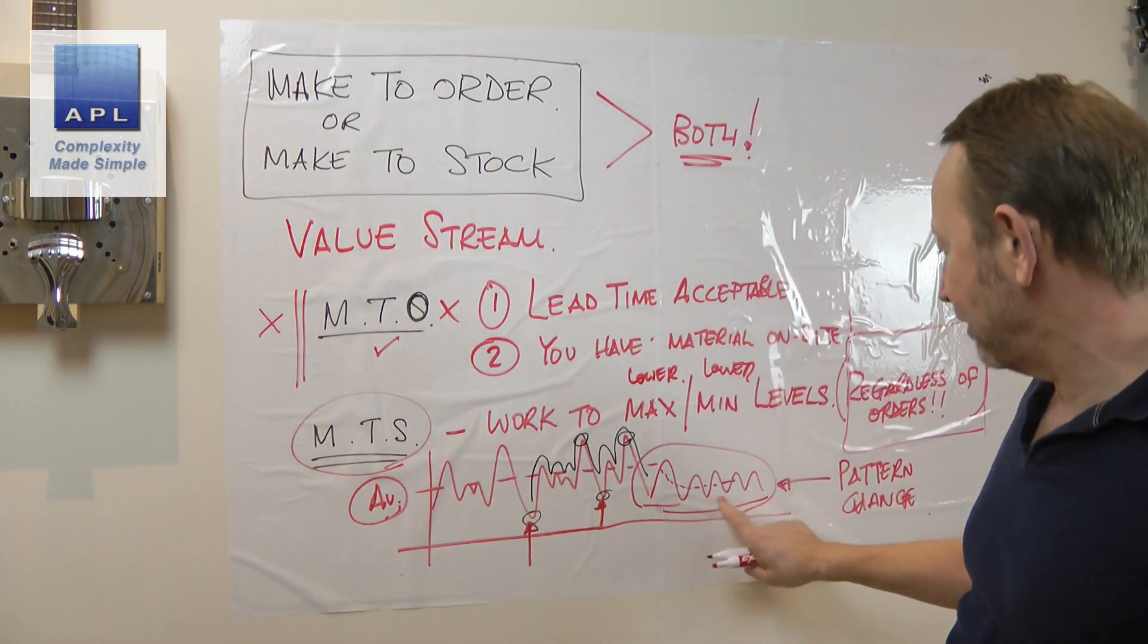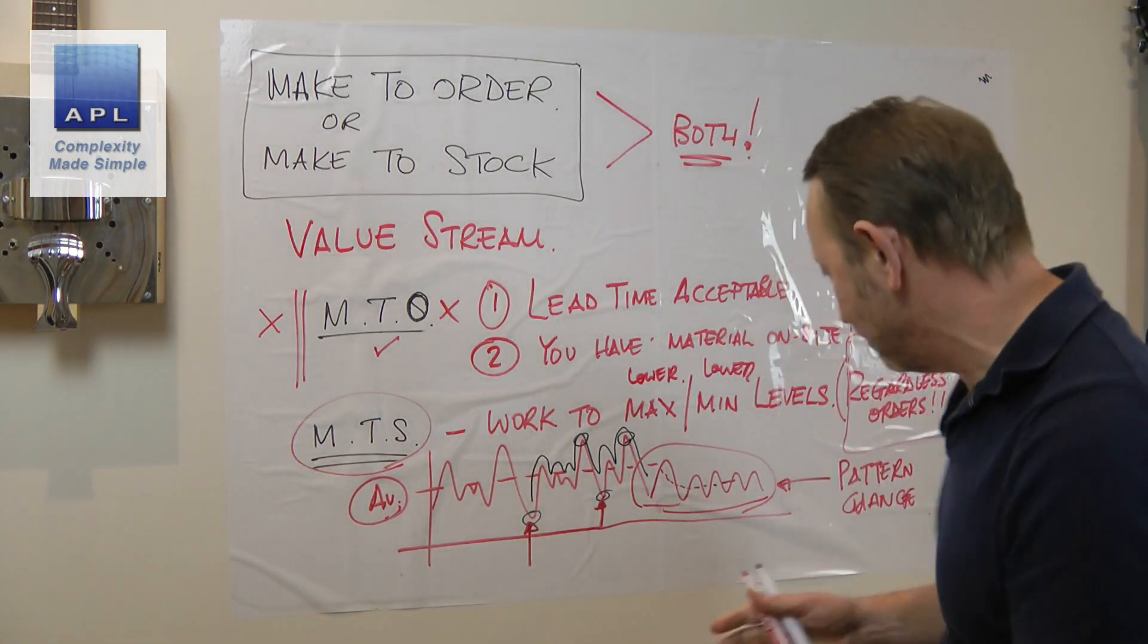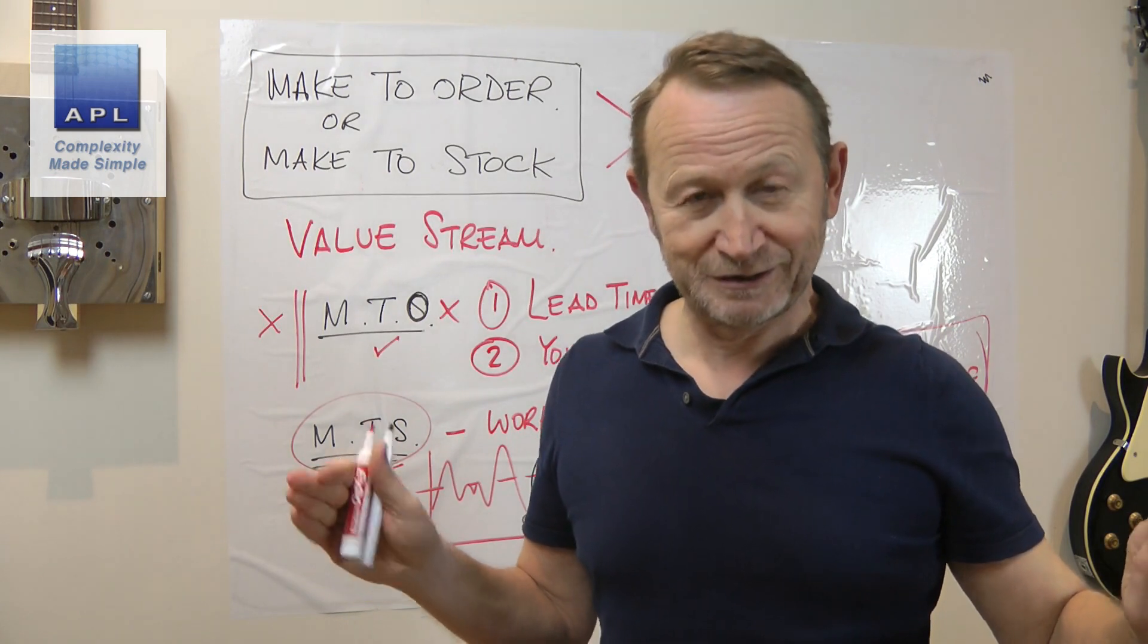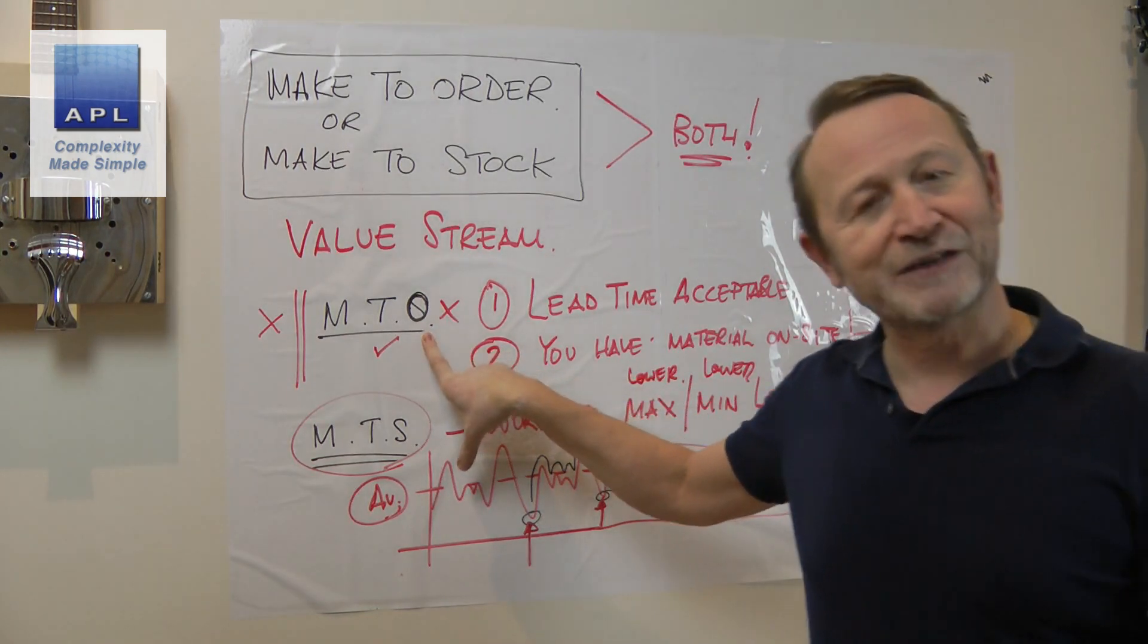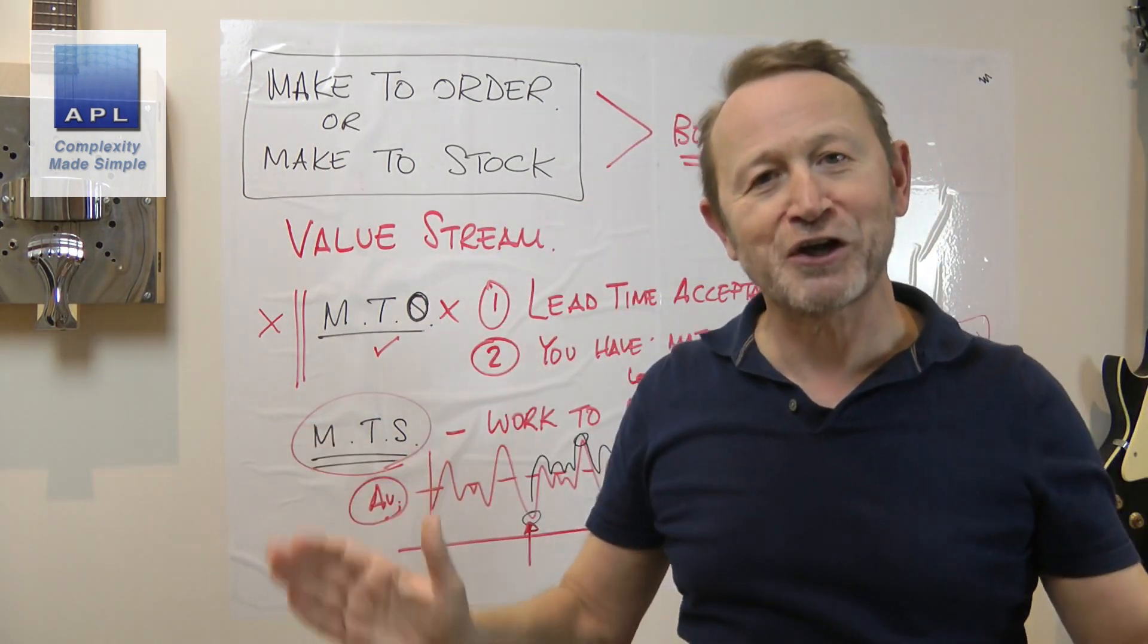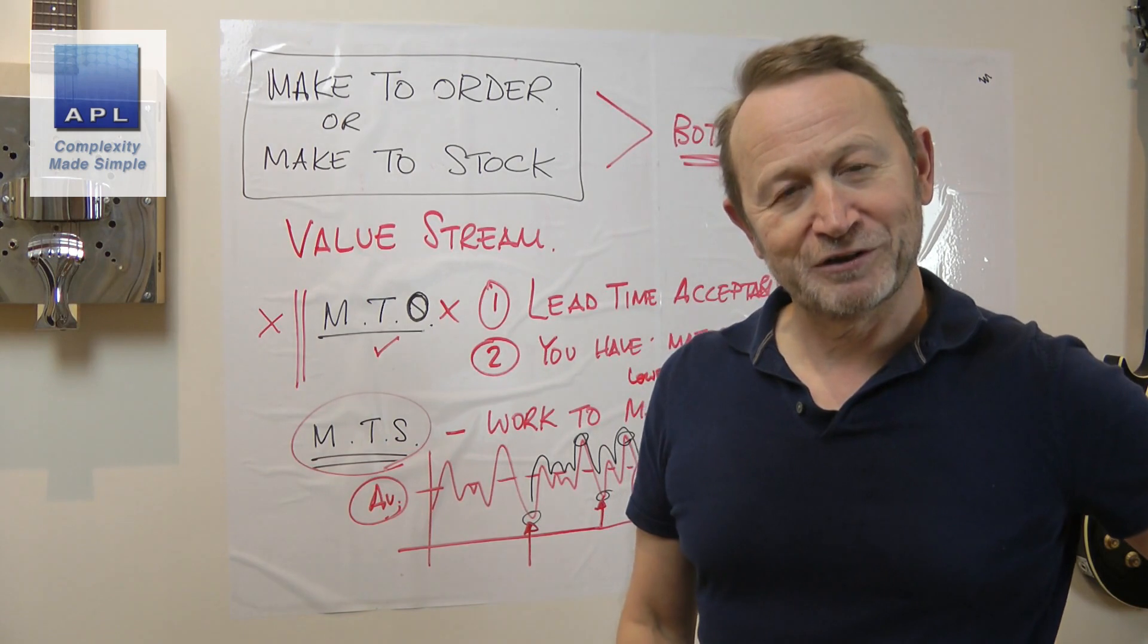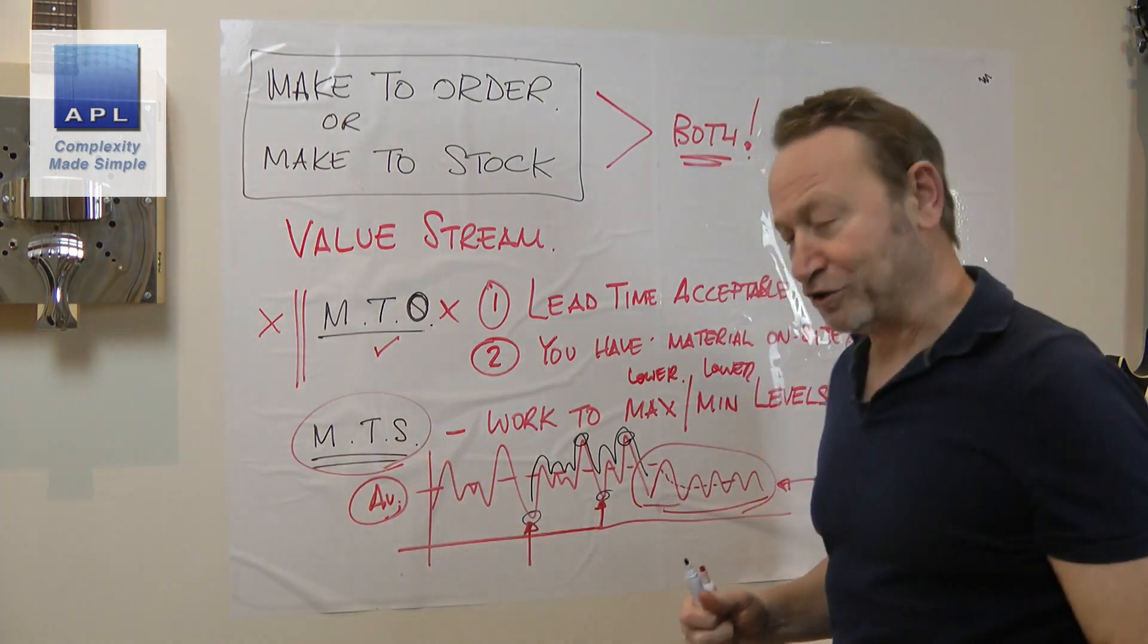This is something that you watch, and if you start to see a pattern change on the demand, then you might react to it. This is probably something that you review once a year, once every six months. That's as much as you would do this. But what you don't do is react to every data point, because you're going back to this thing and you're now reactivating the make to order system that you decided you couldn't do because you didn't have the lead time and the material to supply the customers and the market.